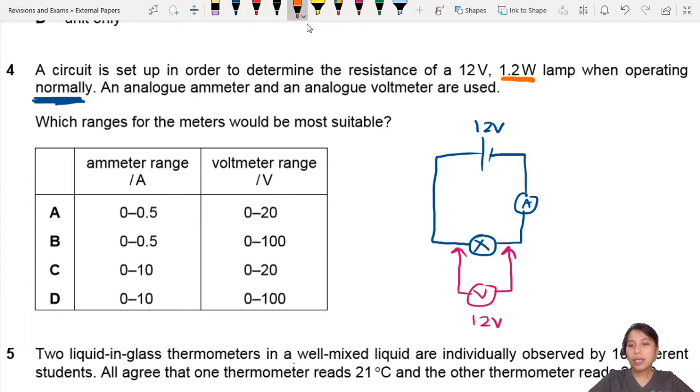In other words, the lamp will give out a brightness - brightness and power are kind of equivalent, they're related - so this will be 1.2 watts. From there you know you have V and you have P.